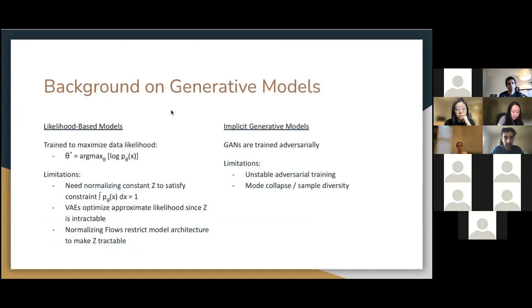So for some background on these two types of generative models, likelihood-based models generally try to model the data distribution P(x) using a parametrized version P_θ(x). And to train likelihood-based models, you ideally want to maximize the data log likelihood to find your optimal parameters. There's some limitations of this method though. So a challenge is that P(x) has this constraint—it needs to integrate to one because it's a probability density function. And so you often need this normalizing constant Z, which is tricky to work with.